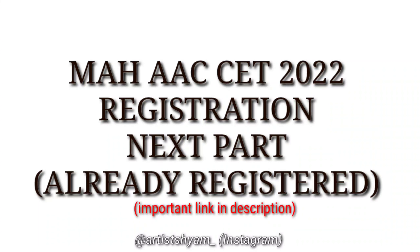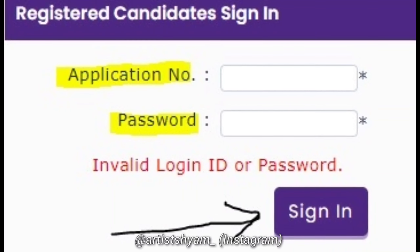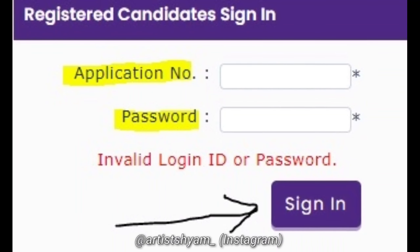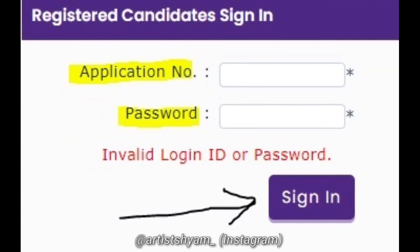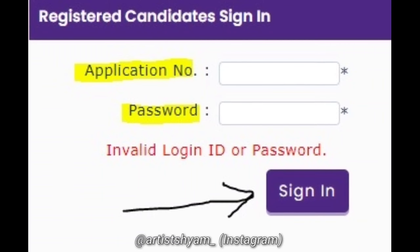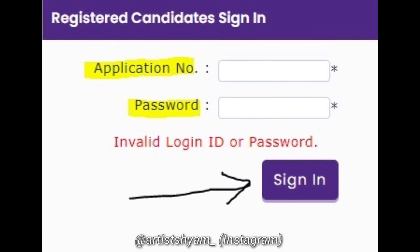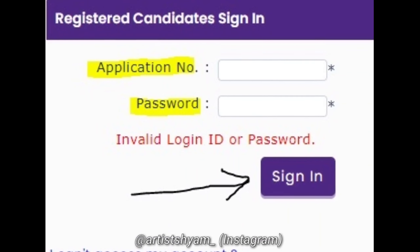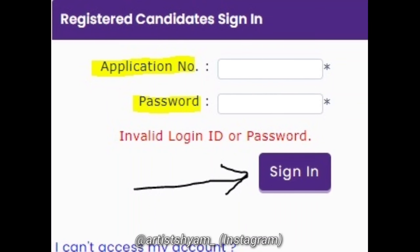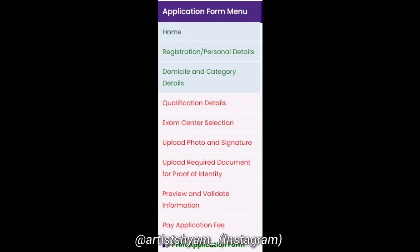When you register — I was already registered and you will see it on the screen — click on the process. You will have a screen where you will enter your application number, which will also serve as your mobile number, along with the password you have selected. Then you will have to click on Sign In.